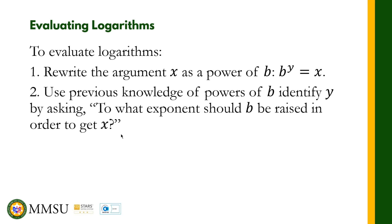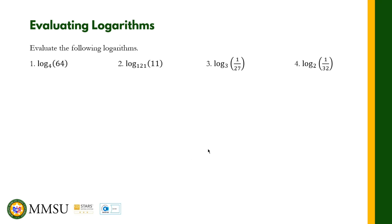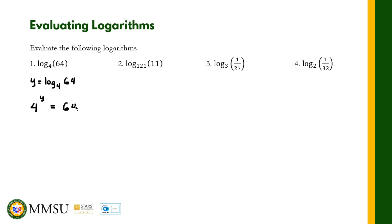To illustrate this, let us answer some examples. We have four examples here. For number one, we have the logarithm with base 4 of 64. First, we define this as y, so y is equal to the logarithm with base 4 of 64 — basically we are solving for the value of y. Let us convert this into its exponential form: since the base is 4, we have 4 raised to y is equal to 64.